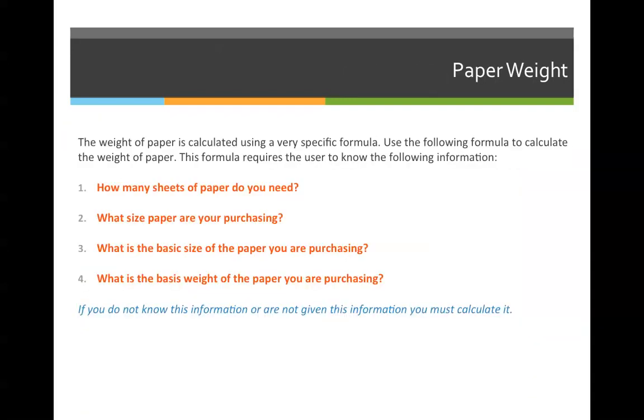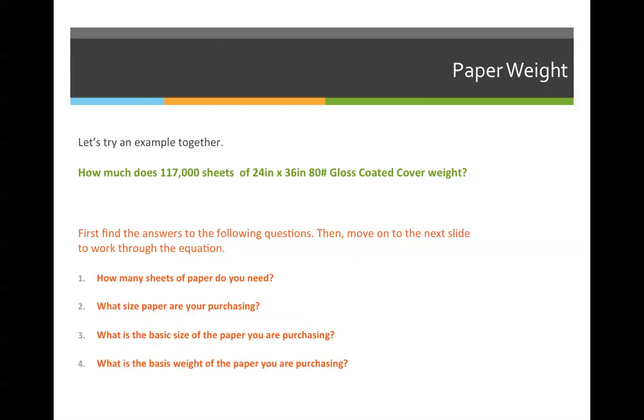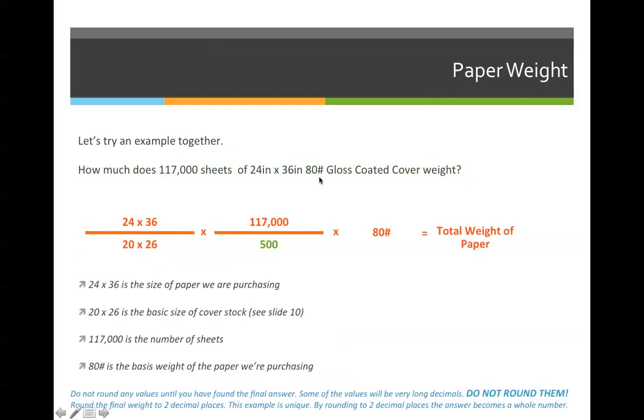Okay, let's go back to our problem here. And last but not least, number four, what is the basic weight of the paper you're purchasing? And that is 80 pound gloss coated cover, so the answer is 80 pounds. Now that we have all four of those answers, we can plug them into our formula.